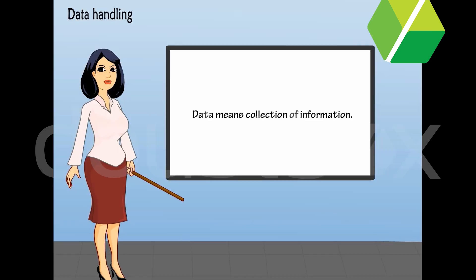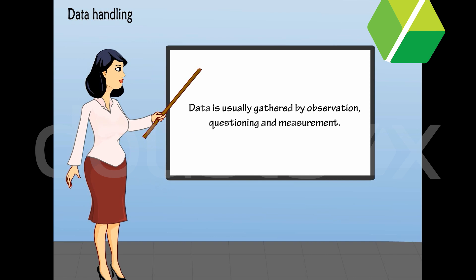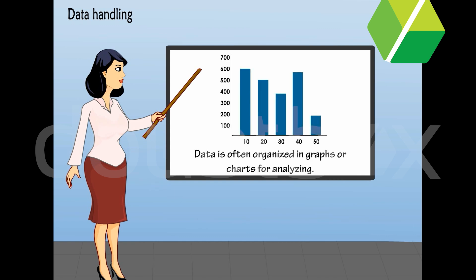Data means collection of information. Data is usually gathered by observation, questioning, and measurement. Data may include facts, numbers, or measurements. Data is often organized in graphs or charts for analyzing.